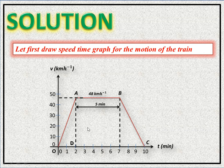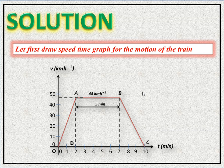This trapezium OABC has two parallel sides: side OC and side AB. The height of the trapezium is AD. The velocity (height AD) is 48 km/h. Side OC is 10 minutes and side AB is 5 minutes.